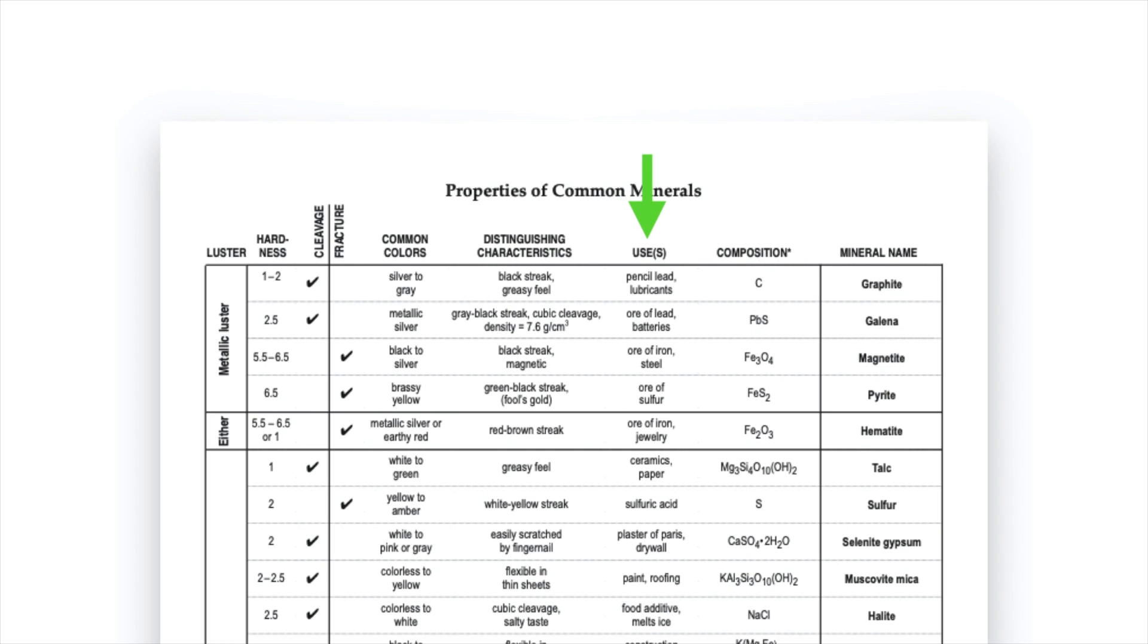So moving across we then have uses. This is what the minerals are commonly used for. So pyrite is used as an ore of sulfur, muscovite mica is used in paint and roofing. That's interesting information but not really great for identifying samples but interesting nonetheless. Similarly we have composition and that tells you the elements that make up the mineral. So it's also interesting and good to know but not necessarily super useful. By the way if you don't know any of these abbreviations, for example graphite is made of the element C which stands for carbon. Down on the very bottom of the page is a key that tells you what the abbreviations mean.